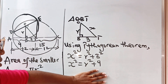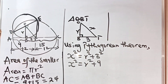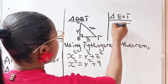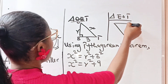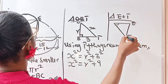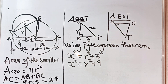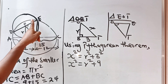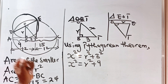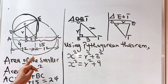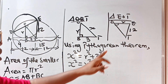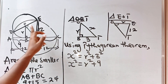Now let's consider the other triangle, triangle EOT. We have a 90-degree angle here. OE is also the radius of the smaller circle, so that side is R. The value of ET is also the radius of the bigger circle, which is 12. So ET equals 12. And OT is our X. Using the Pythagorean theorem on this triangle, 12 squared equals X squared plus R squared. Making X squared the subject gives us X squared equals 12 squared minus R squared. Let's call this equation 2.